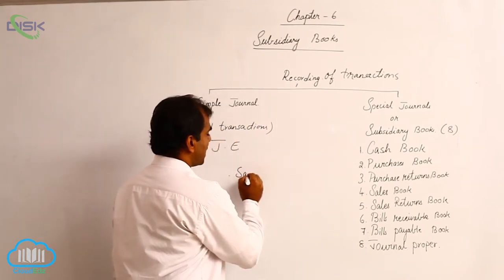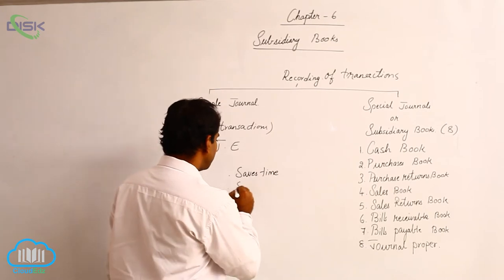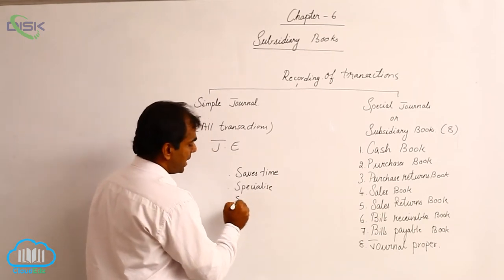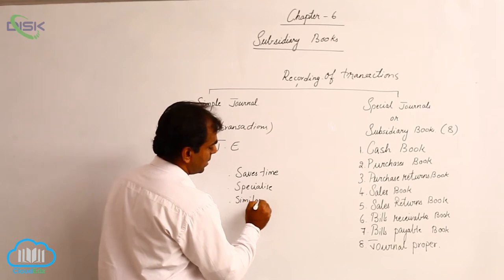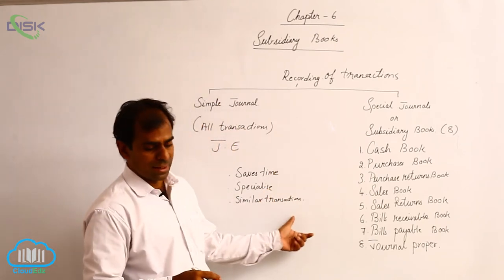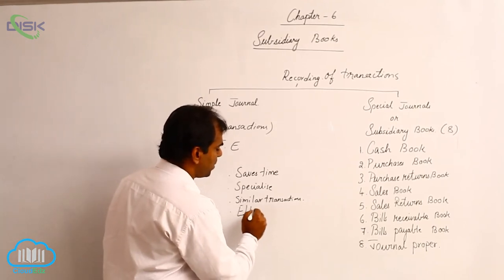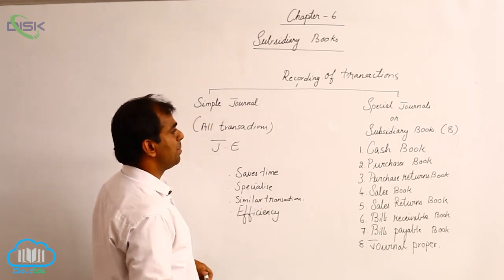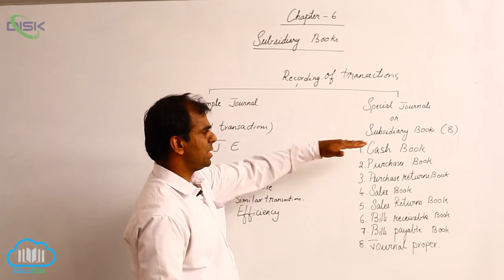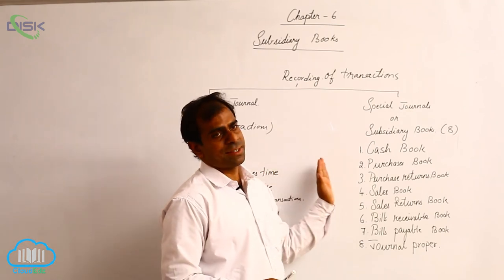One advantage is it saves time. Second, it also helps us to specialize. Then, we can have similar transactions at one place. It also improves efficiency. These are some of the important advantages of maintaining subsidiary books. A subsidiary book is nothing but a special format in which you record similar transactions at one place.